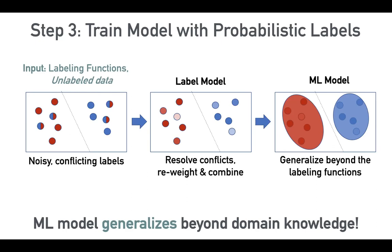What does have the power to generalize is the machine learning models we train with our training data. These models can easily generalize beyond the information in the rules — the powerful neural networks out there today support transfer learning, pre-training, and a wide array of capabilities. So if you want to predict whether a particular email is ham or spam, you pass it into the trained ML model regardless of whether a labeling function would have assigned it a label.